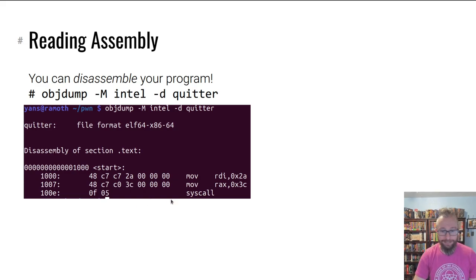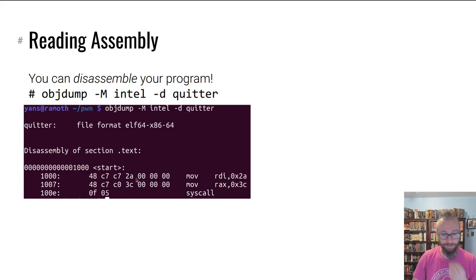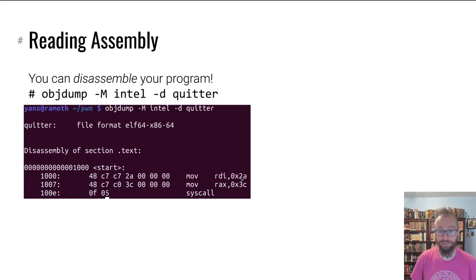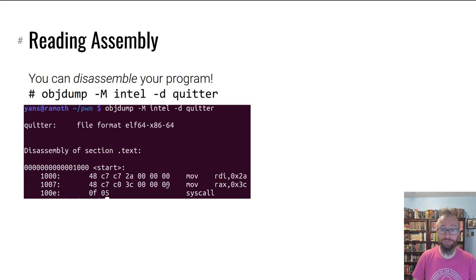This is the binary representation of those instructions. So 0x2a is the value being moved into RDI — it's a 32-bit number stored in little-endian, so you see 2a 00 00 00 00 00 00 00. And here's your 3c 00 00 00 00 00 00 00. This instruction moves into RAX, this one moves into RDI, and 0x0F05 is the syscall instruction. And now you have a program.